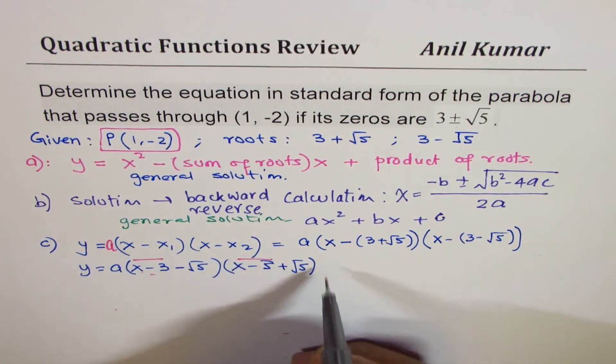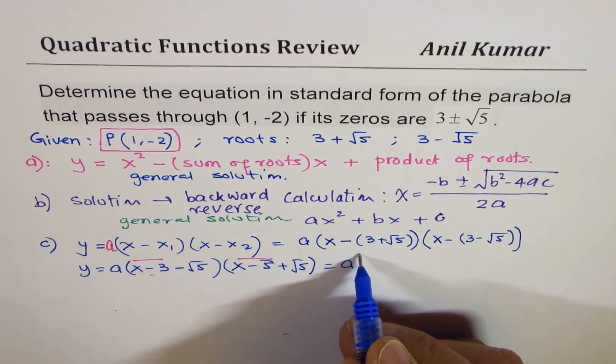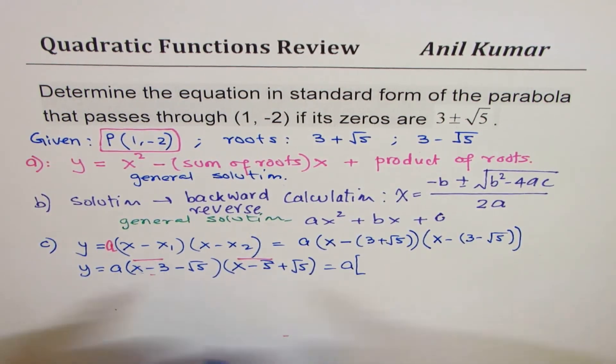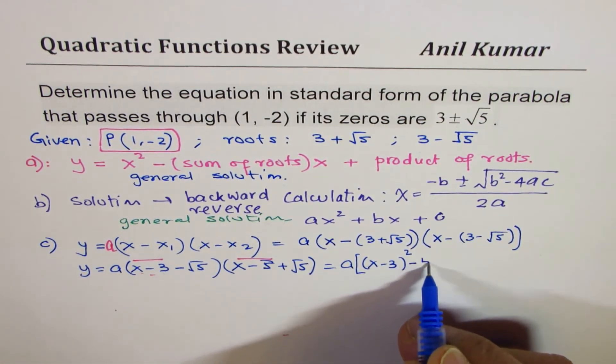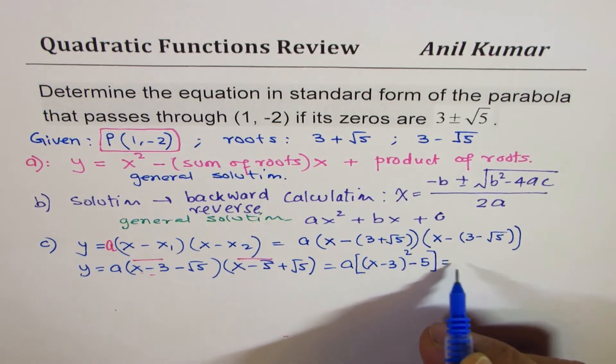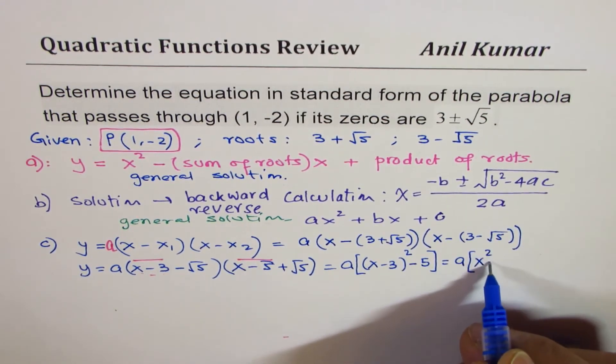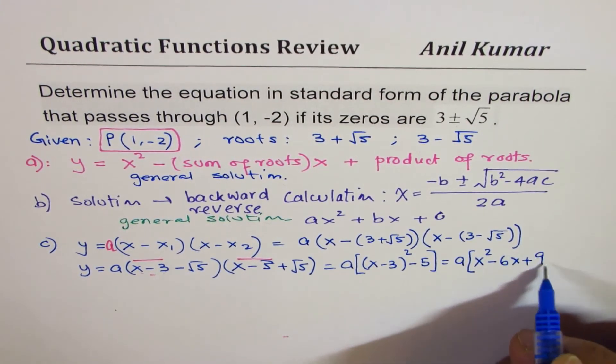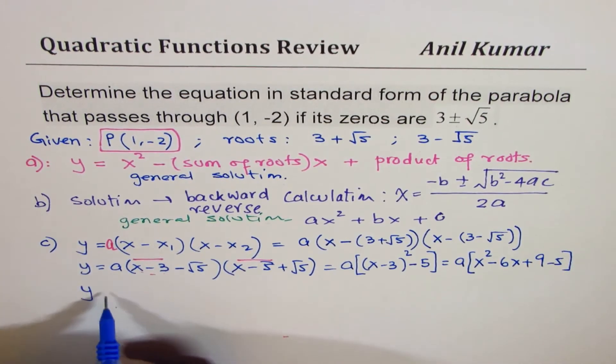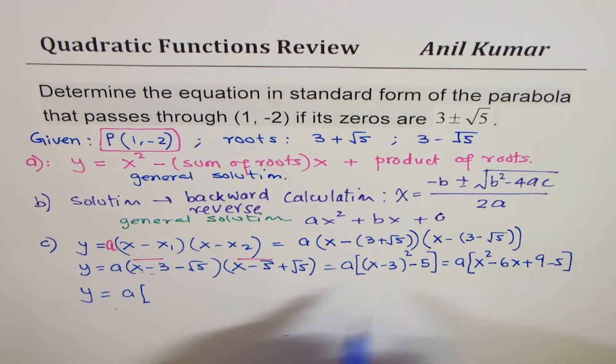Use any method. What you'll get here is square of this which is (x - 3)² - (√5)². So I could expand this which is x² - 6x + 9 - 5. So that gives me y = a(x² - 6x + 4). This is easier within brackets.